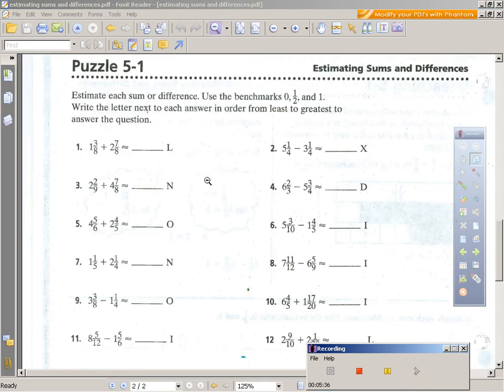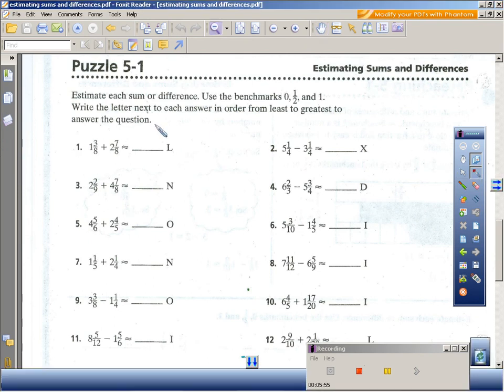Now on the back page there's a puzzle to where you have to do just what we've talked about the past couple of days. What's going to happen is you're going to end up with some answers here. Let me show you an example. For example, on number one, one and three-eighths, we would benchmark that to be, and I'm going to write these below. I don't think I have enough room over here. I'm just going to put the answer there.